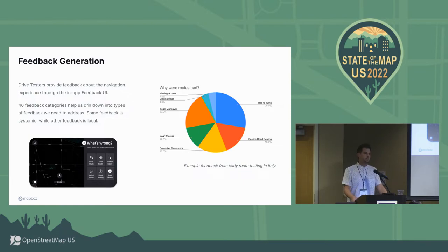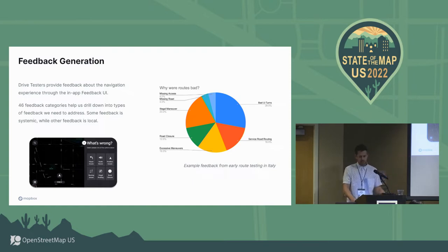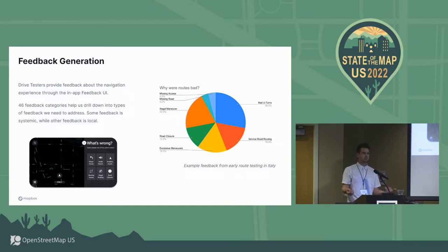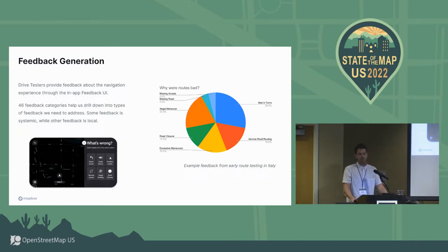My team is in the business of generating feedback. Feedback comes in the form of manually entering it through the UI, maybe through trace data and telemetry. We collect feedback about the experience in a number of different ways. This pie chart to the right is just a small example of the kind of breakdowns we look at for a particular geography — this one from early route testing in Italy. We have 46 feedback categories that we can classify, organize, and aggregate the different types of experiences people have while testing. Some of these issues are not unique to a particular region — they may be happening across all of Europe.